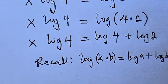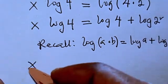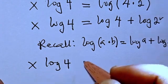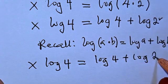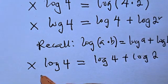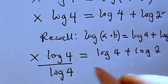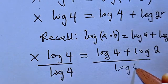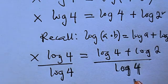From there we are going to have x log 4 equals log 4 plus log 2. Now we are going to divide through by log 4. So we divide through by log 4.